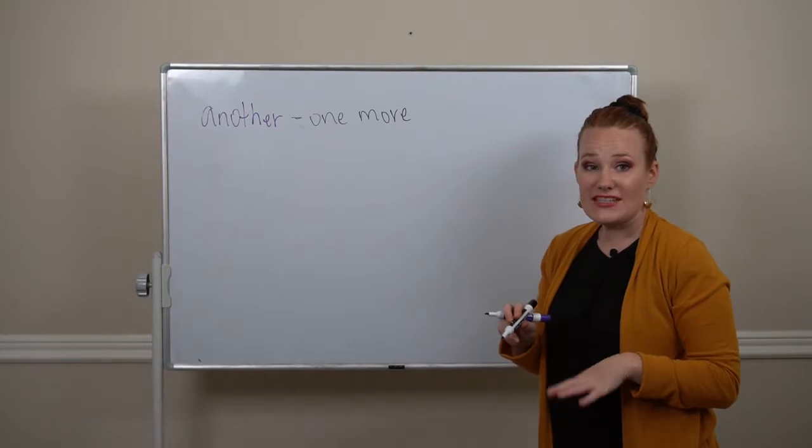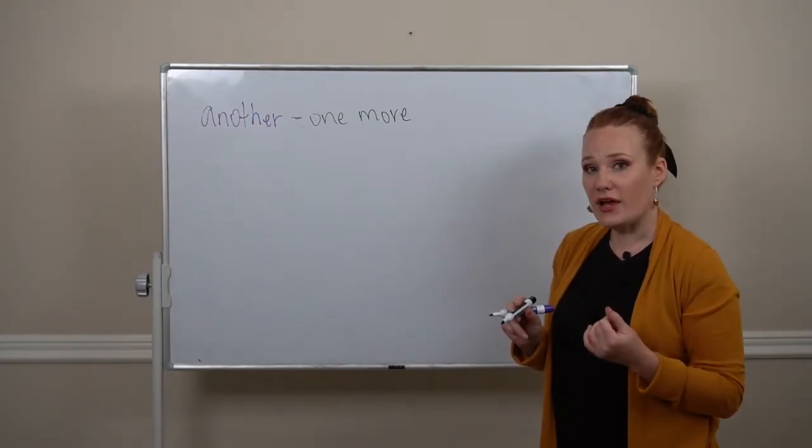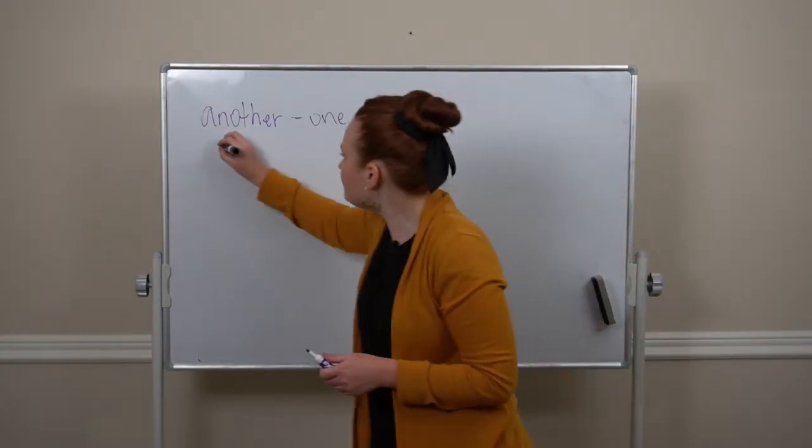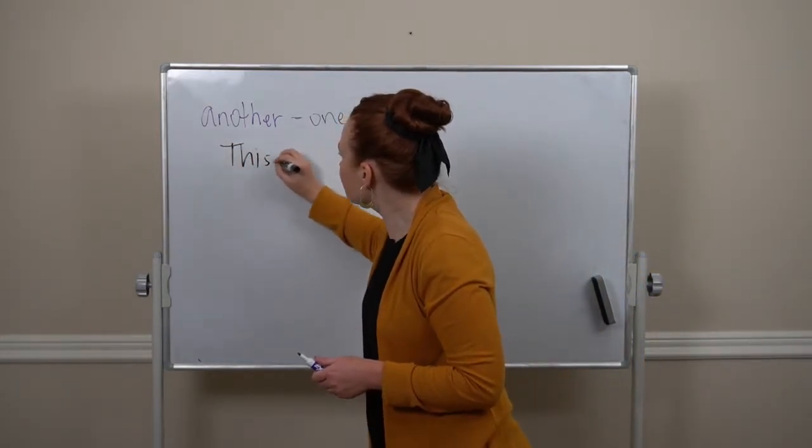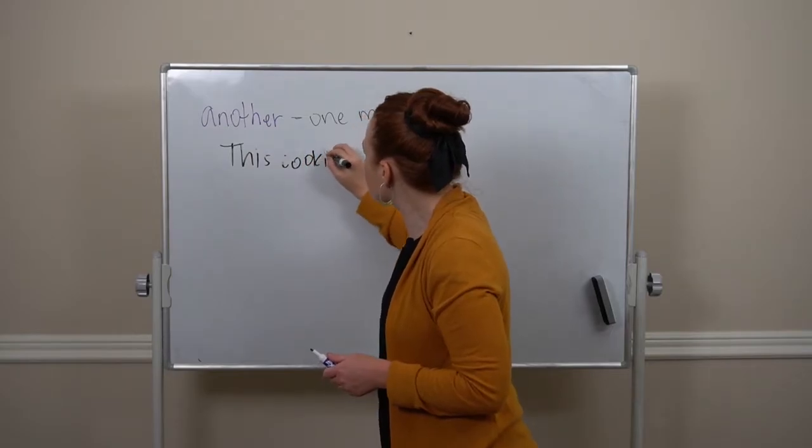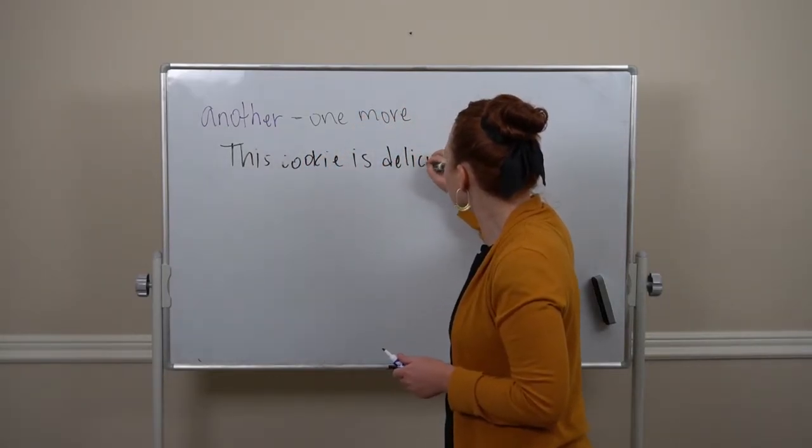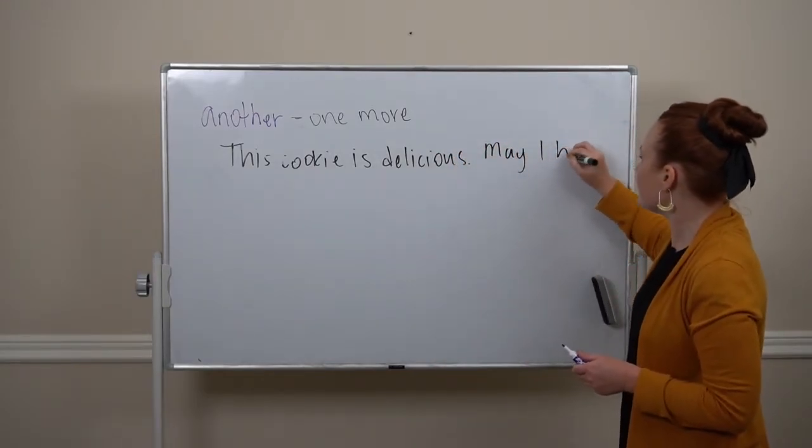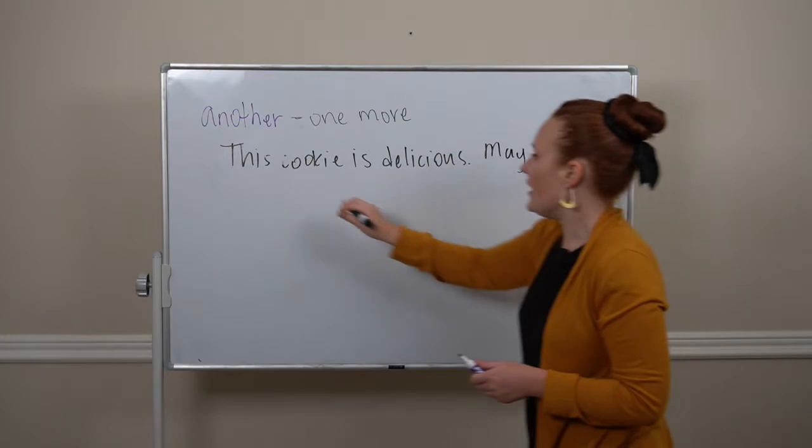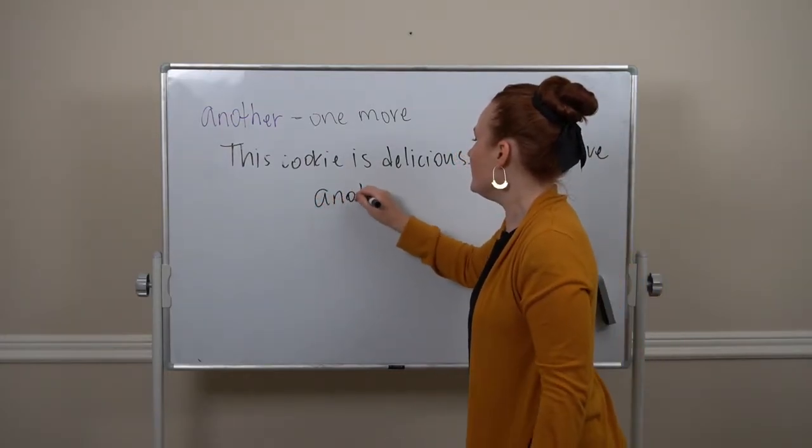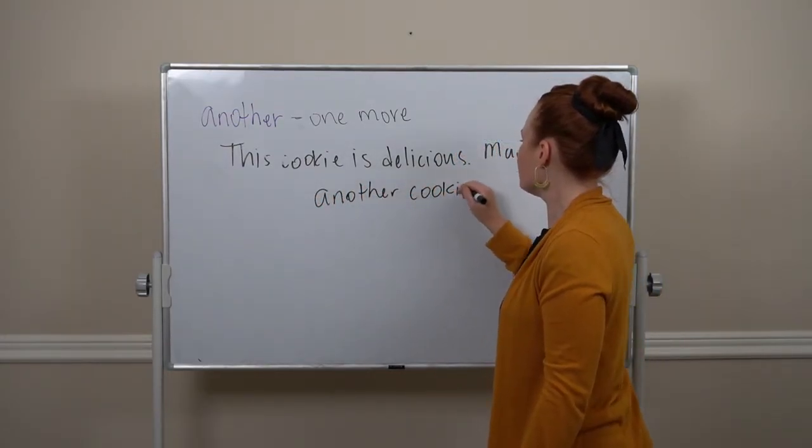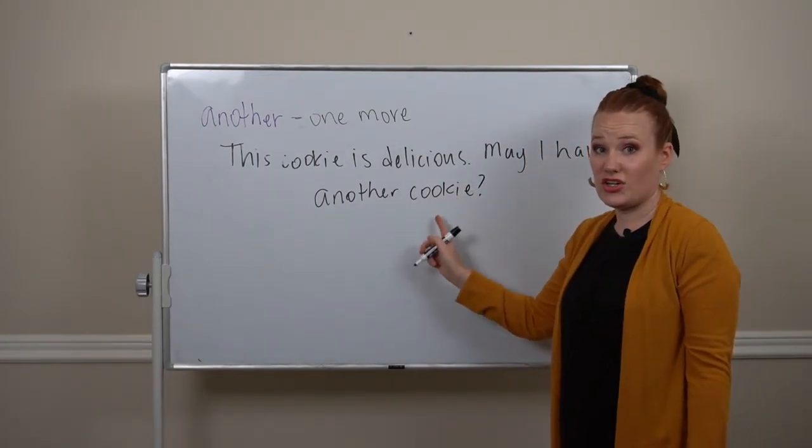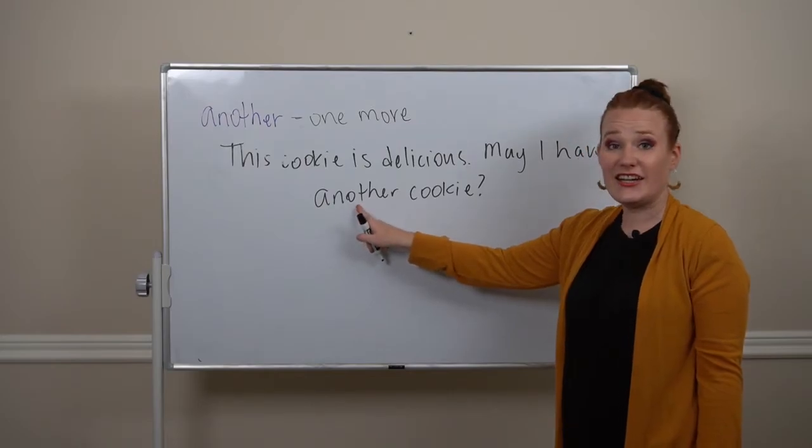It can be used as an adjective or a pronoun. Let me show you what I mean. I could say, this cookie is delicious. May I have another cookie? Here, another is describing the word cookie. So another here is an adjective.